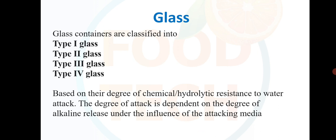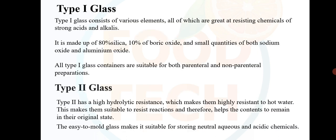Moving on to glass as a packaging material: glass containers can be classified into Type 1, Type 2 and Type 3 based on their degree of chemical or hydrolytic resistance to water attack. The degree of attack is dependent on the degree of alkaline release under the influence of attacking media. Type 1 glass consists of various elements great at resisting chemicals, strong acids and alkalis — it is made up of 80% silica, 10% boric oxide and small quantities of sodium oxide and aluminium oxide.